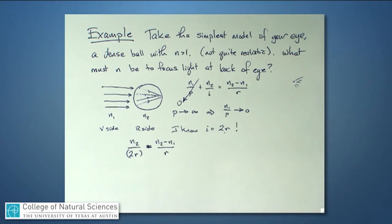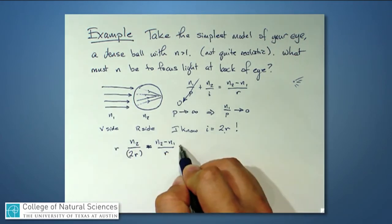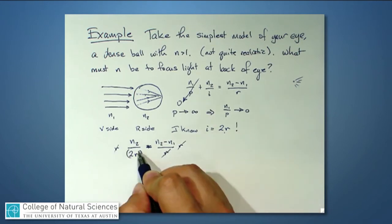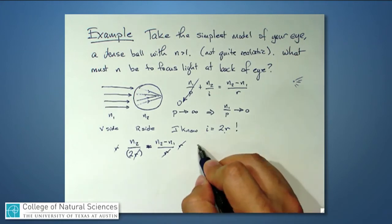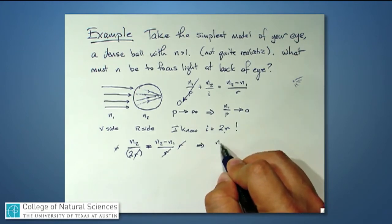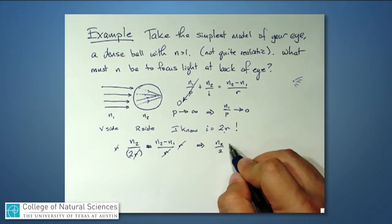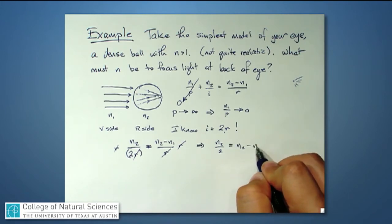I still don't know what R is, but I can multiply both sides by R, and that cancels the R's on all sides. And now I have N2 over 2 equals N2 minus N1.